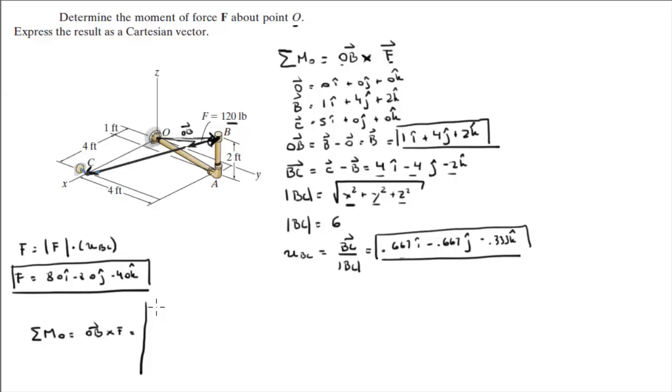The way you calculate it is you draw your matrix. I, J, K. OB first and it's 1, 4, 2. And then F which is 80, negative 80, and negative 40. So the next thing you do is you rewrite your first and second columns. 1, 4, 80, negative 80.